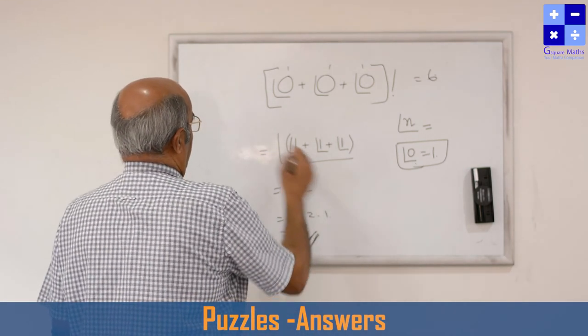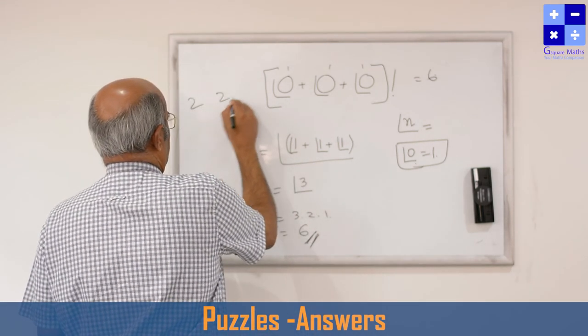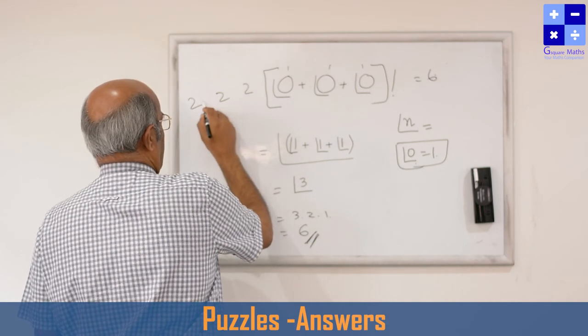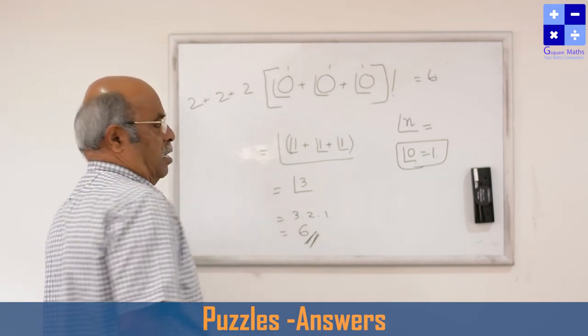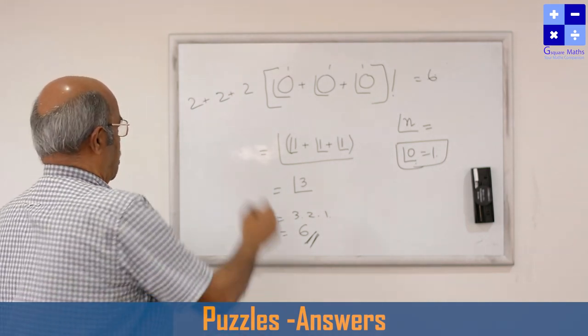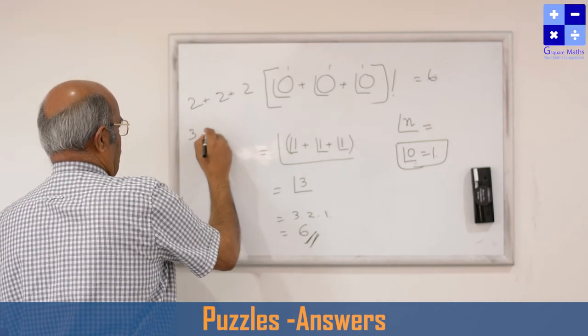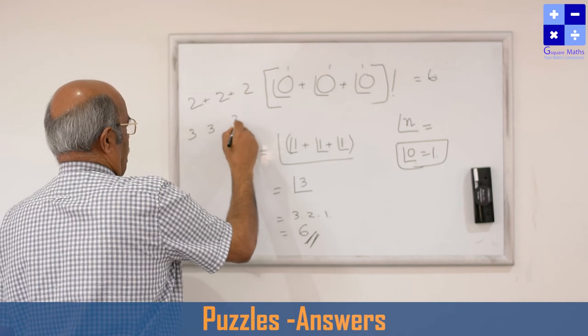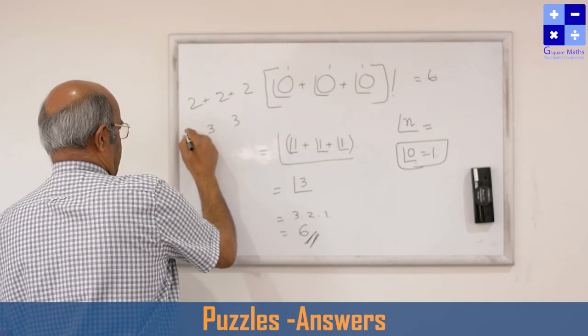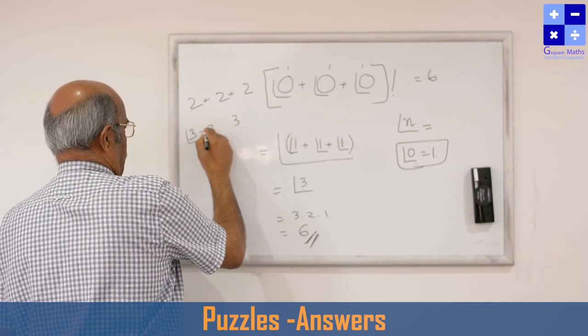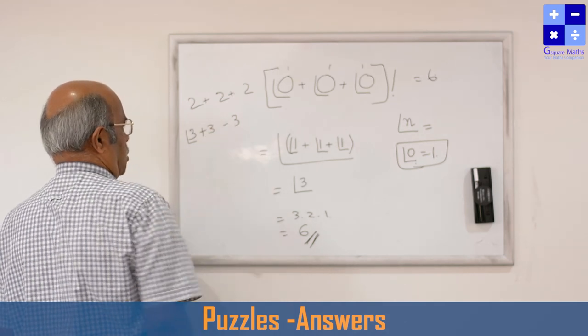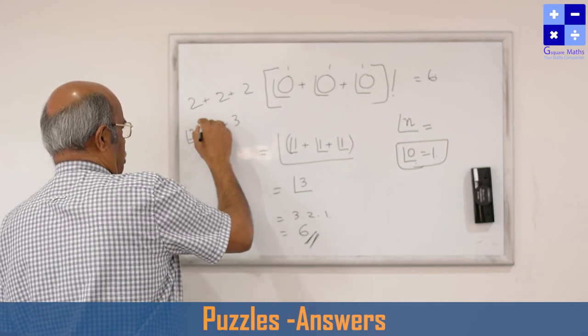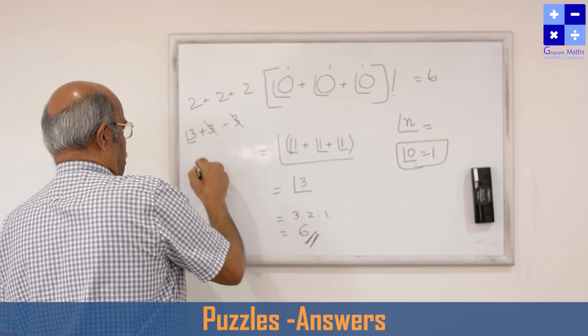Similarly, 2, 2, 2—that is very simple. You can put this. 3, 3, 3, 3, 3, 3—factorial 3, factorial 3 plus minus, this will get cancelled. Factorial 3 is 6. So using three 3s I am getting the answer 6.